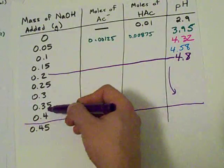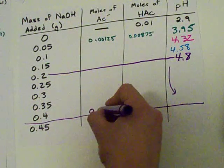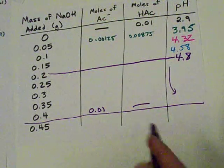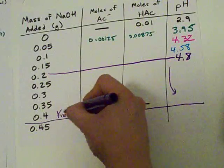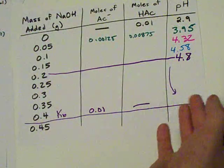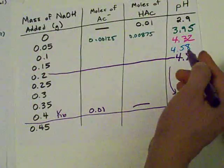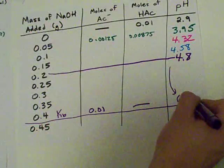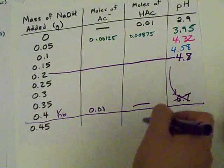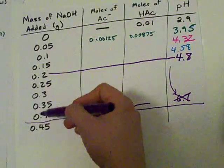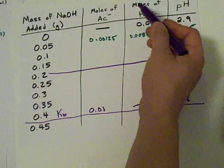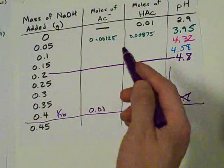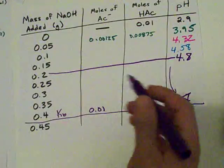Once you've added 0.04 grams of the NaOH, you're going to have converted everything to conjugate base, and you're going to have no acid left. You're going to have to do a regular Kb equation to get the pH at this point. I honestly don't know what it is. I'm going to guess that it is 6.7, but don't quote me on that. And then, as you add even more NaOH, there's no more acid to titrate, so now you're just adding raw OH-. That makes your pH go through the roof.